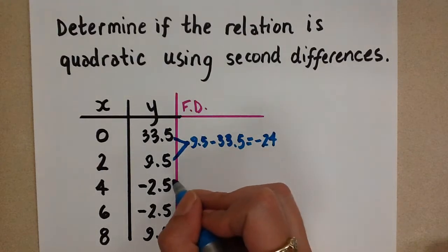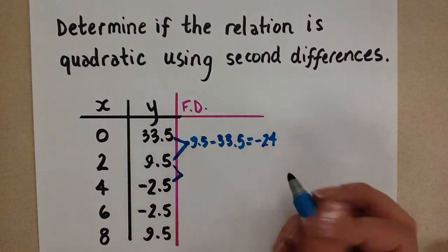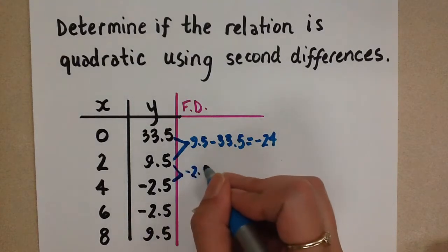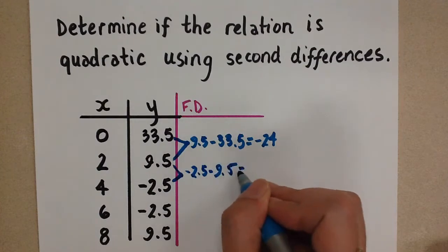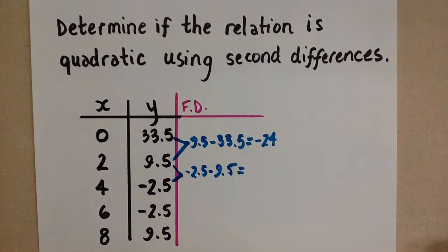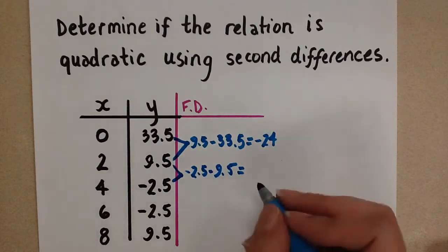So then we do it again. Negative 2.5 minus 9.5. Negative 2.5 minus 9.5. And here we have negative 12.